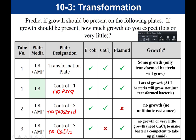The reason we do controls is to verify that our experiment is working as expected. If we only had the transformation plate and saw colonies, we wouldn't know if the ampicillin was effective. By including control plates showing no growth where expected, our transformation results become more meaningful — we can confirm that ampicillin is inhibiting non-resistant bacteria and that colonies on the transformation plate are genuinely due to successful transformation.